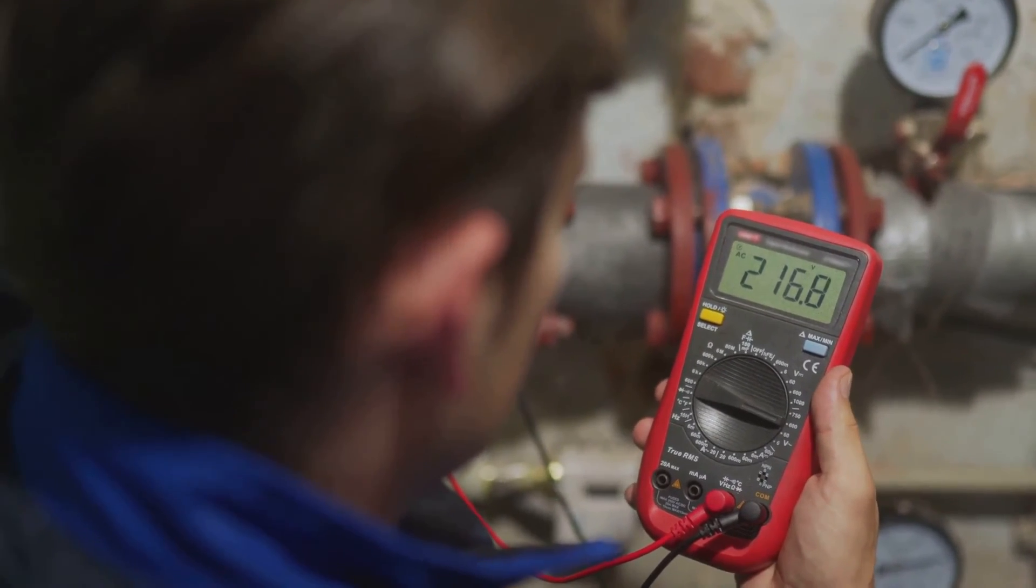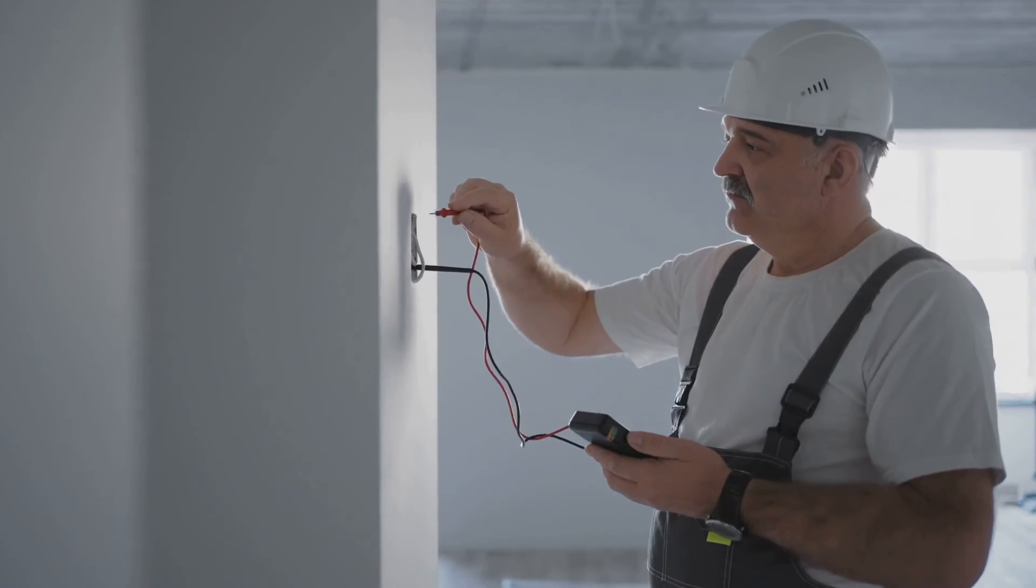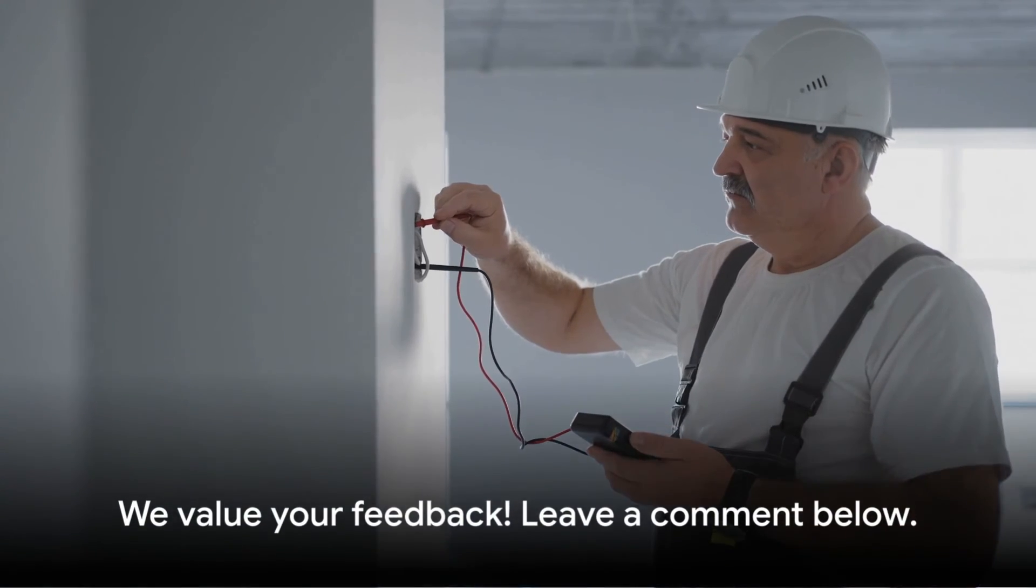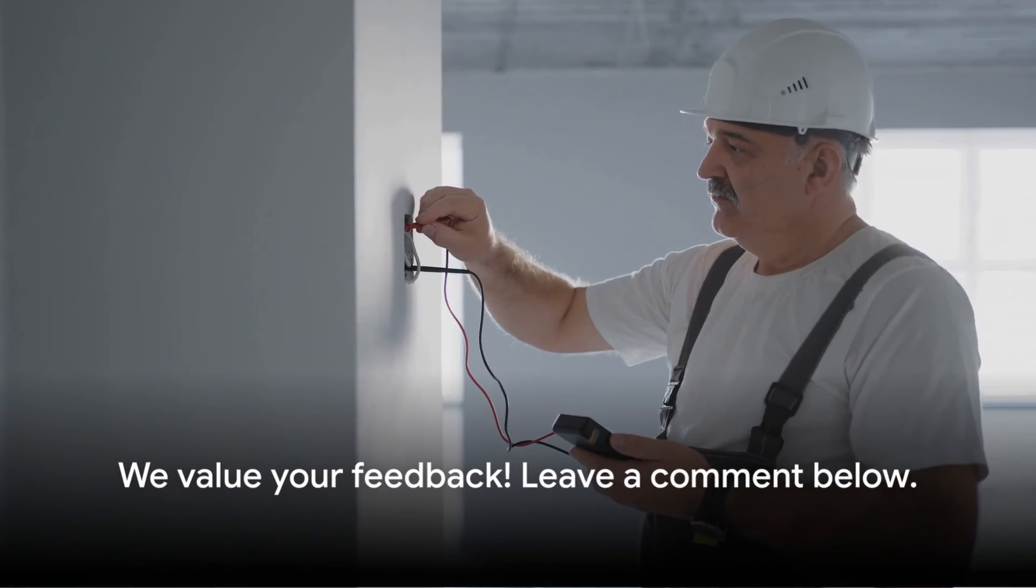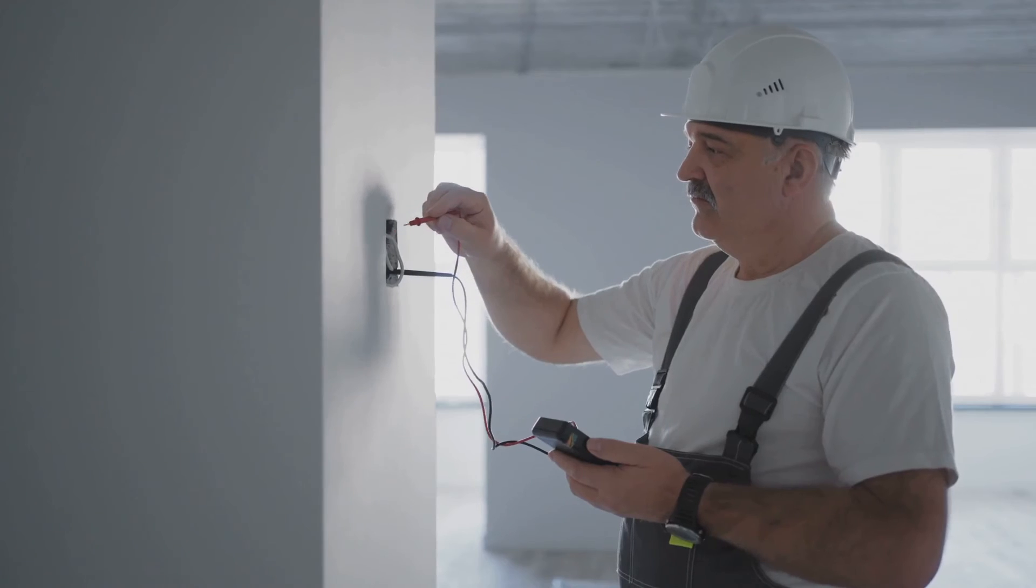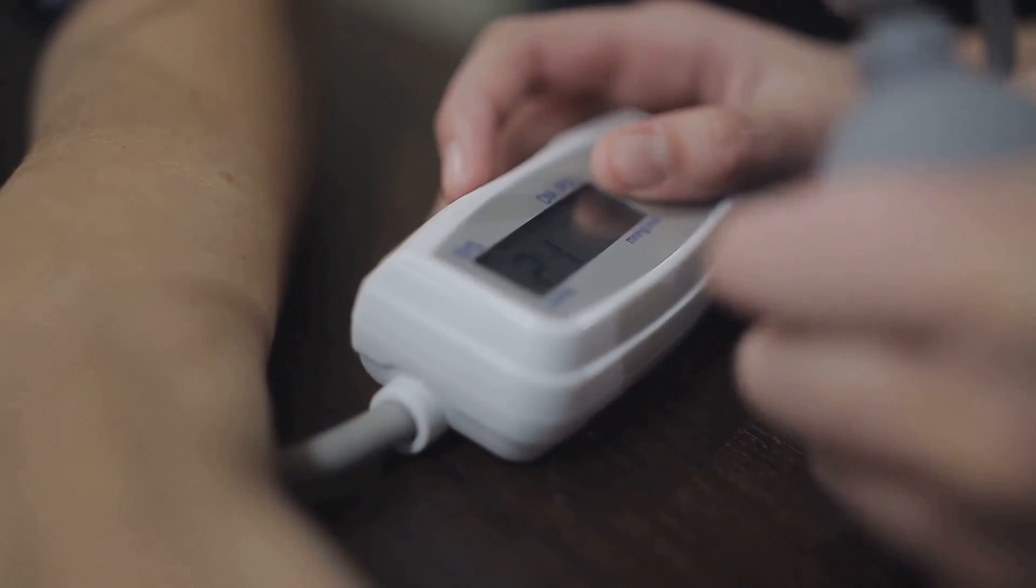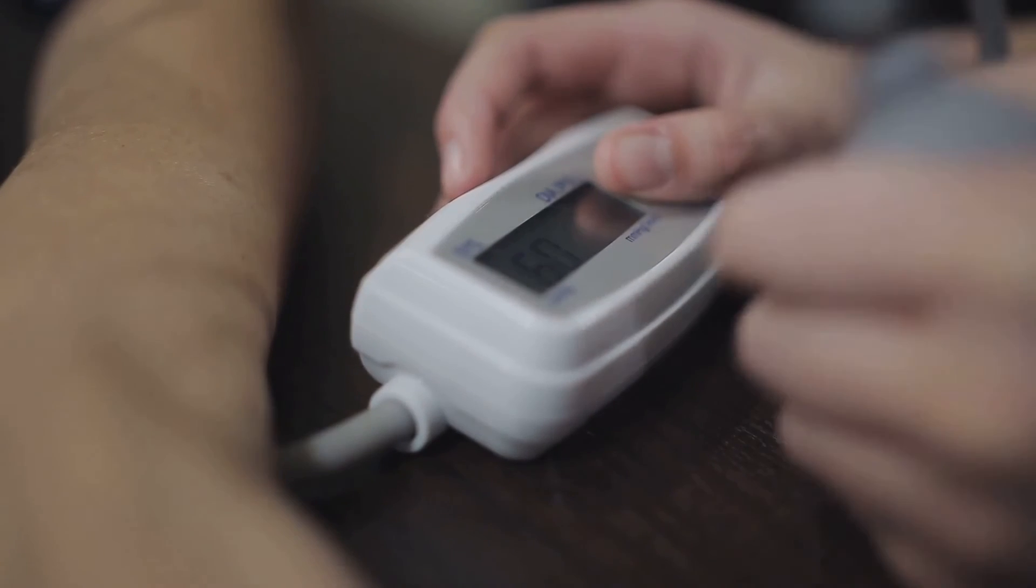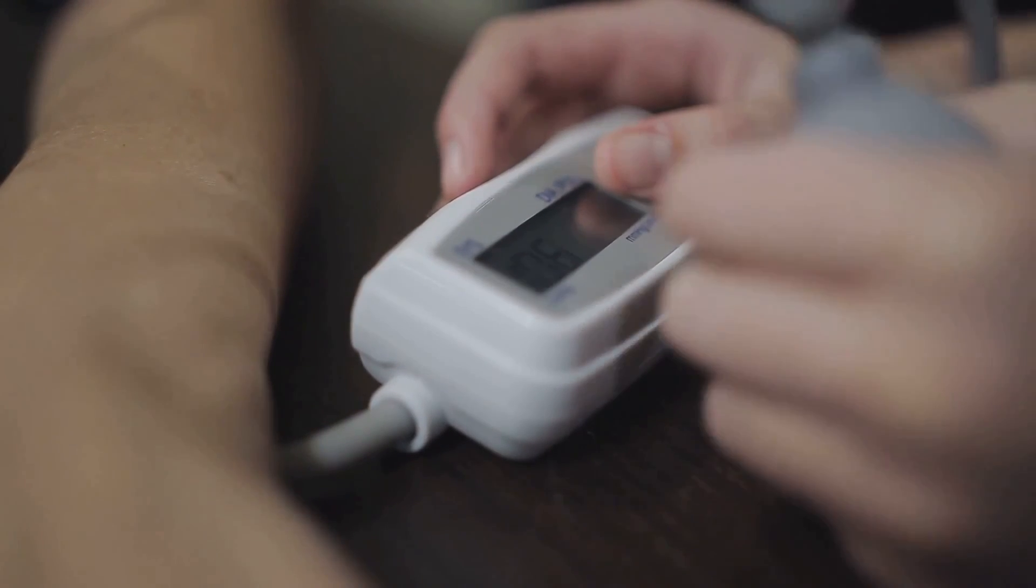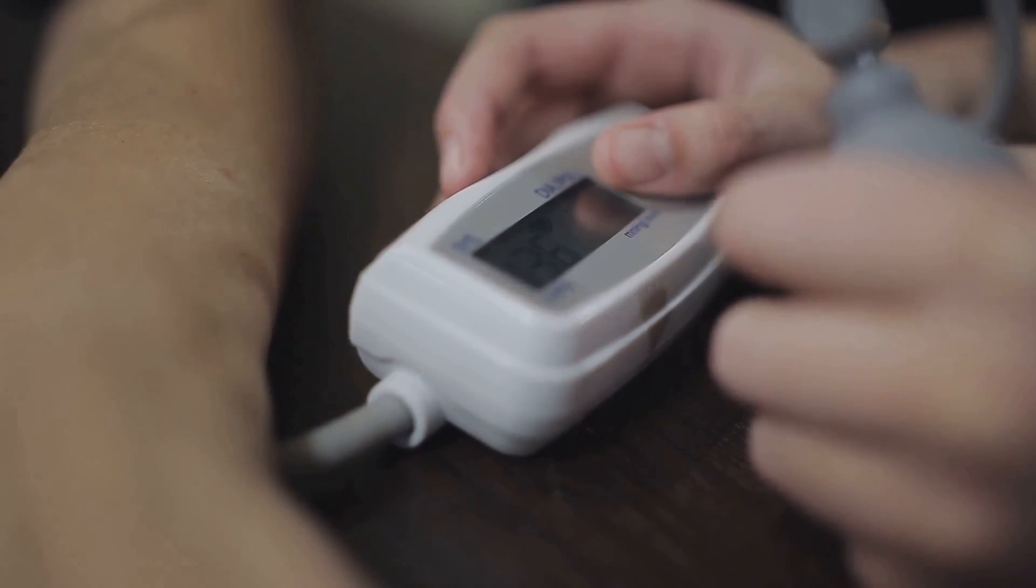And there you have it, a step-by-step guide on how to measure 4 to 20 milliampere using a multimeter. If this tutorial was helpful, or if you have any questions or suggestions for future videos, please leave a comment below. And don't forget to hit that like button, subscribe, and ring that notification bell to stay updated with our latest content. Until next time, keep those measurements precise, and your project successful.